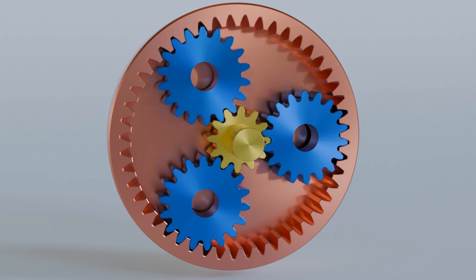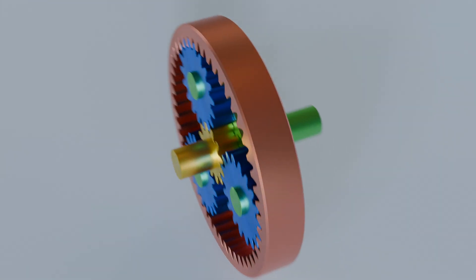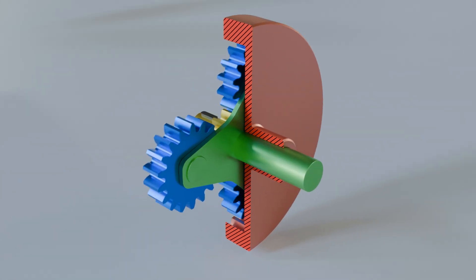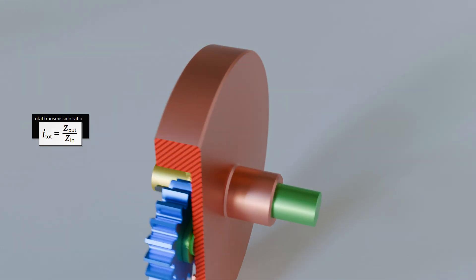In the final stage, the idler gears are mounted on a so-called carrier. The carrier in turn is connected to a shaft and is guided coaxially through the output shaft, which is designed as a hollow shaft. The planetary gearbox is now complete in principle. In this operating state, it has the transmission ratio already derived, and the mode of operation does not yet differ from that of the stationary gearbox described at the beginning.